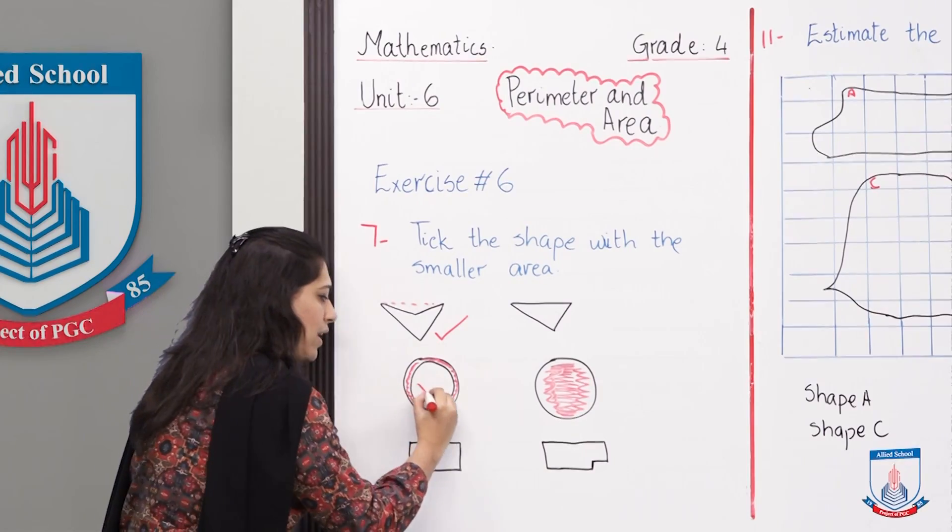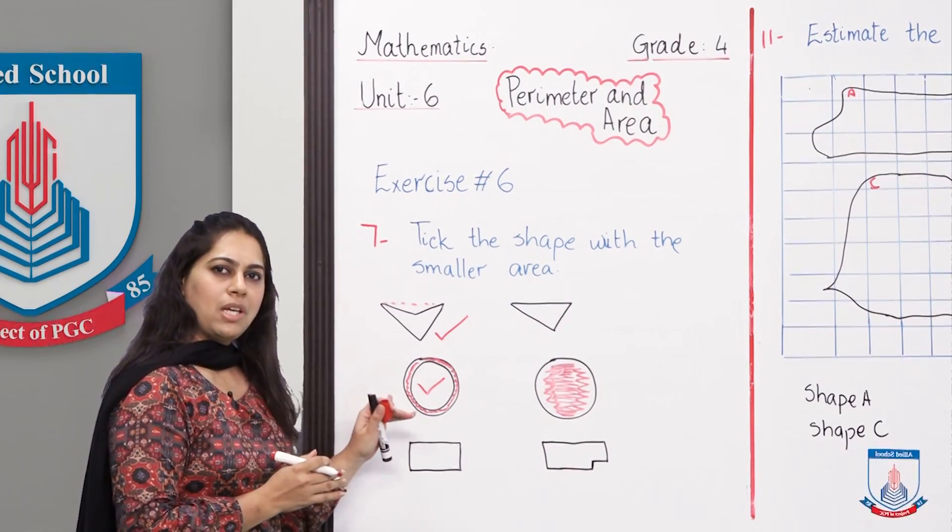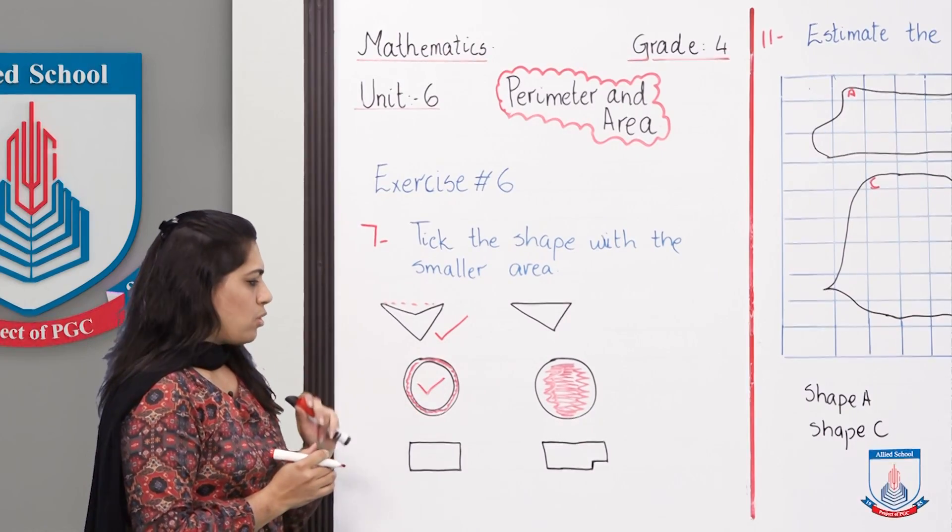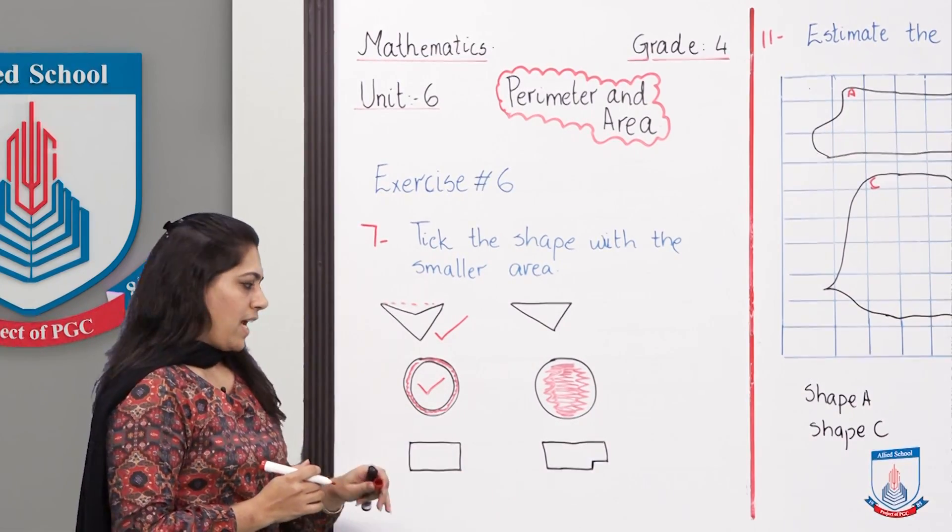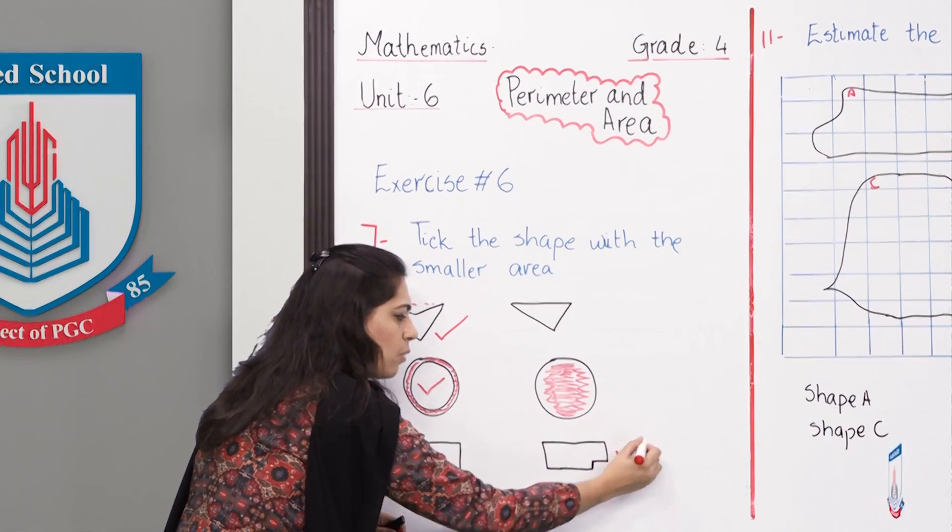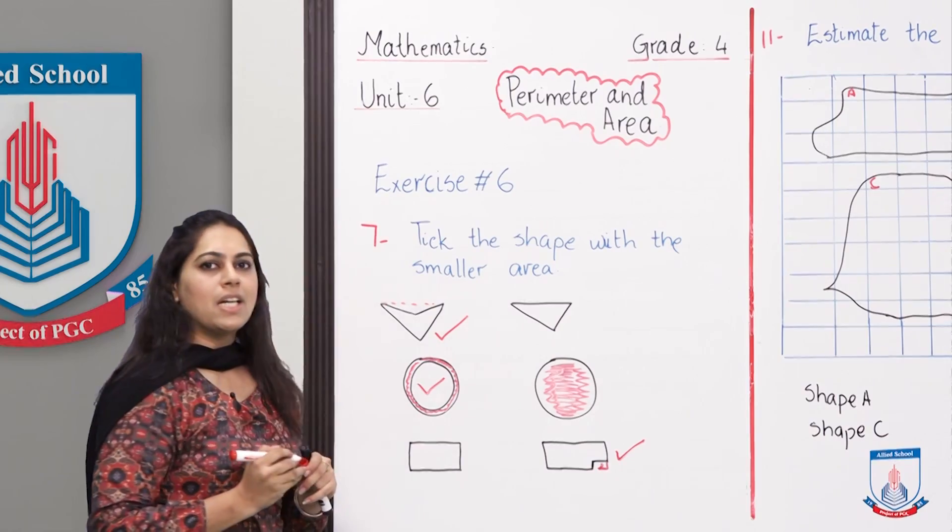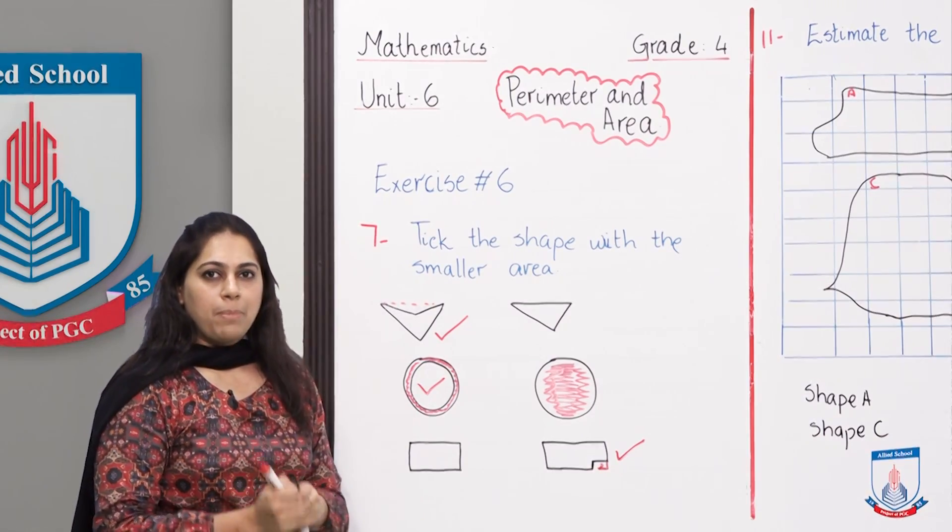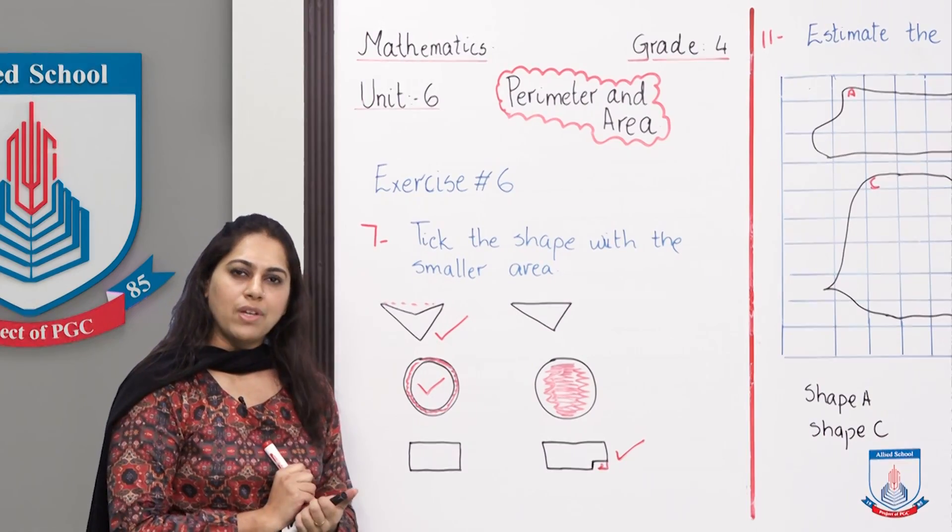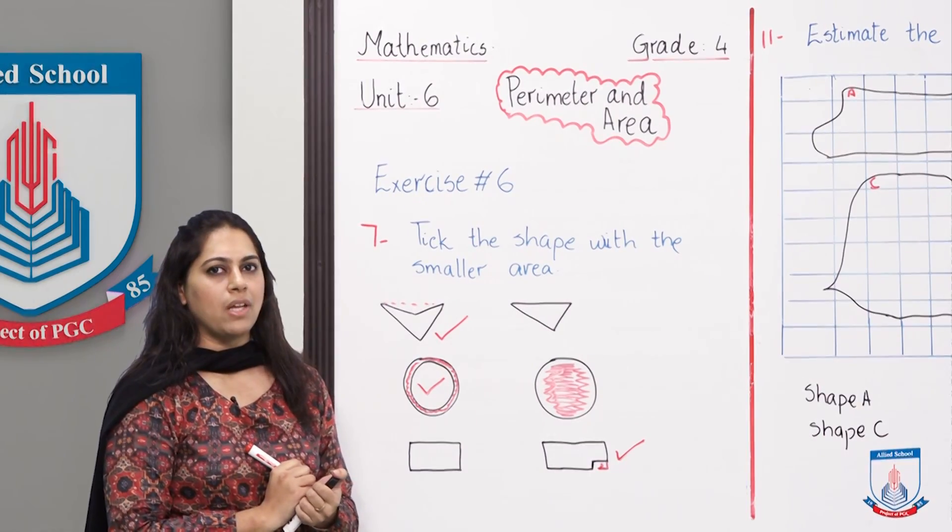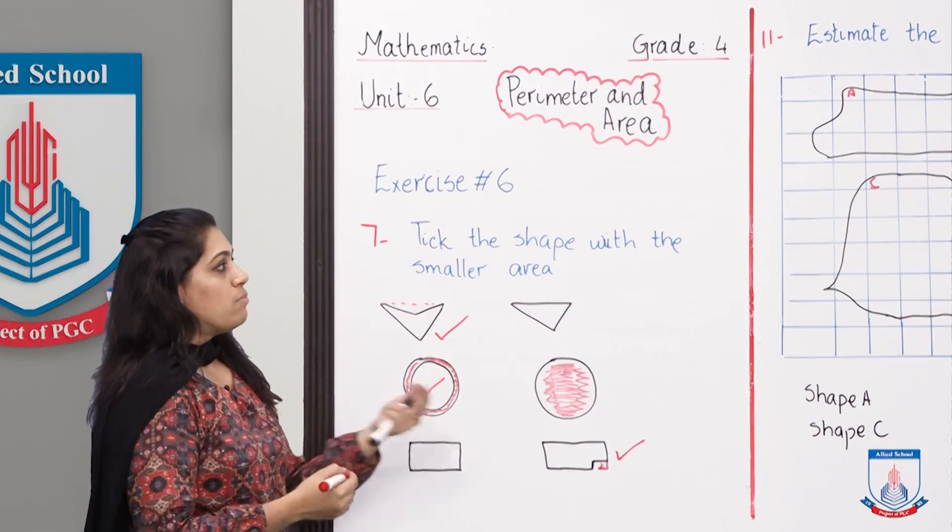Yes children, absolutely correct. This circle's surface area is small, so we will tick this circle. What about this shape? Excellent, it is this one, because this part is not being colored. I hope you understand how we figure out area and how we figure out perimeter.